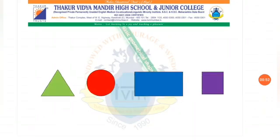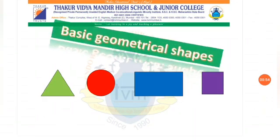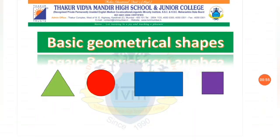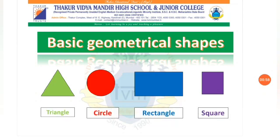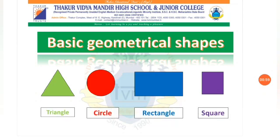Now, students, let's see some basic geometrical shapes. Here they are: a triangle, a circle, a rectangle, and a square.